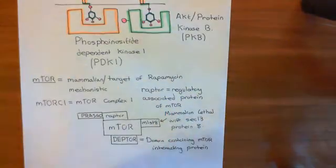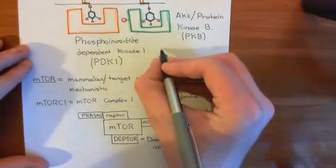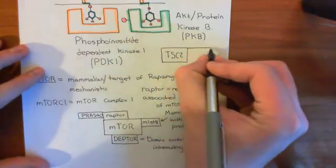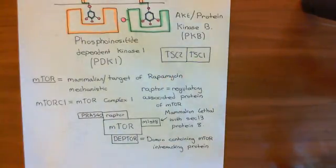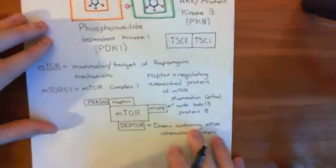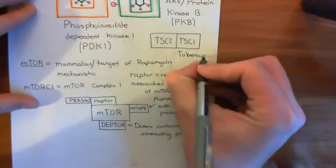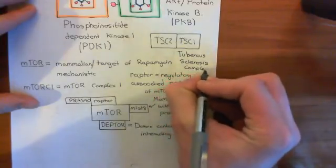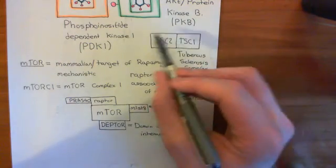The way it's done is through another protein complex known as the TSC1-TSC2 complex. TSC stands for tuberous sclerosis complex. So TSC1 is the tuberous sclerosis complex protein 1, and TSC2 is the tuberous sclerosis complex protein 2. Together, they make up the tuberous sclerosis complex.